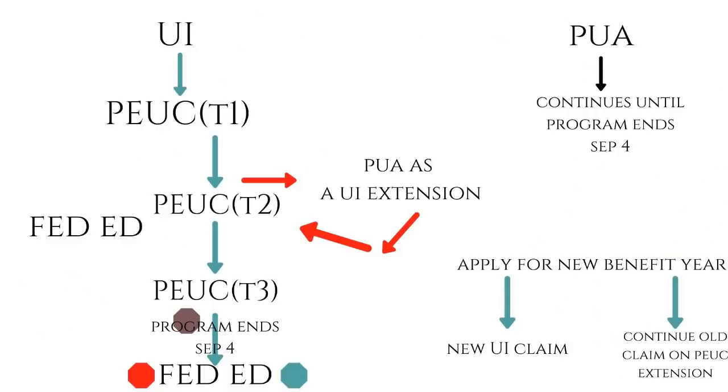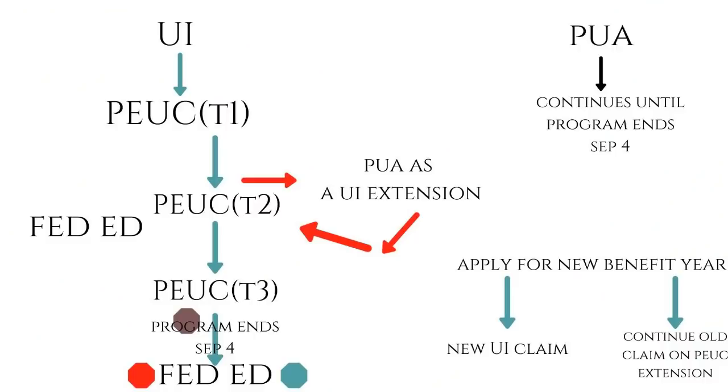Some of you may have received UI, then PEUC, and when that PEUC extension ended, you may have been denied Fed Ed. If you were denied Fed Ed, the EDD may have placed you into a PUA claim as an extension. For those placed into PUA claims as an extension, the EDD is now required to migrate you back over to the newly available weeks of PEUC. This is a requirement due to federal legislation and directives from the Department of Labor. This migration might impact your weekly benefit award amount — if you've seen your weekly benefit award decrease, this would be the reason why.